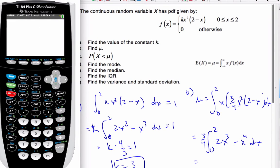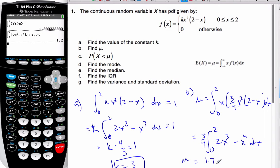Well, if I go math number 9, I'm going to go from 0 to 2 of 2x cubed minus x to the 4th dx, times 0.75, and now I get the mu is equal to 1.2. I could also do this by hand, but if I have my calculator, I'm just going to go for it and do the best I can with that.